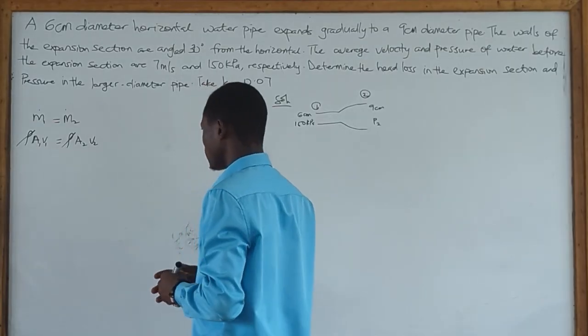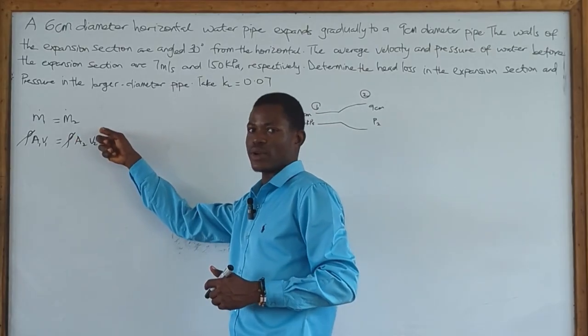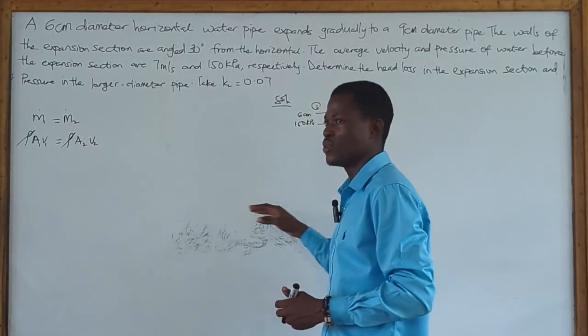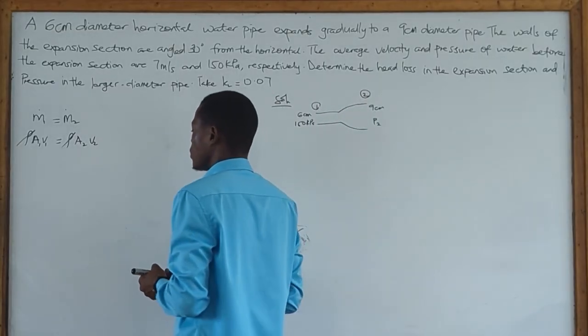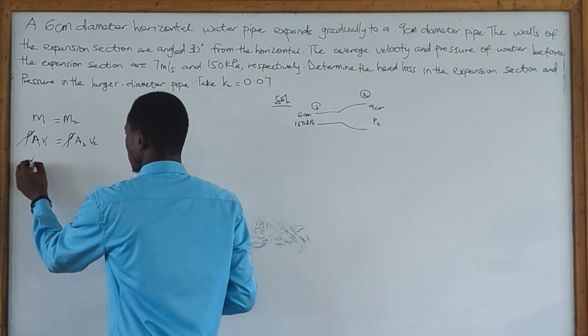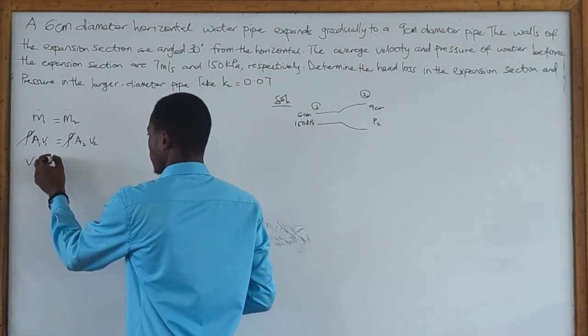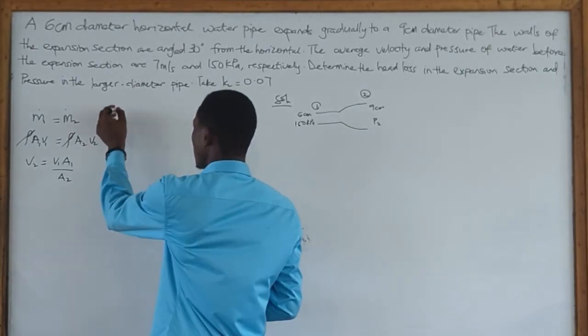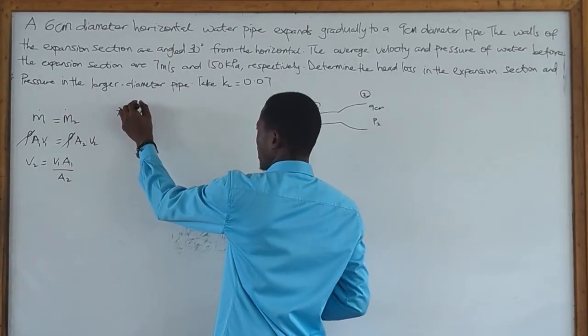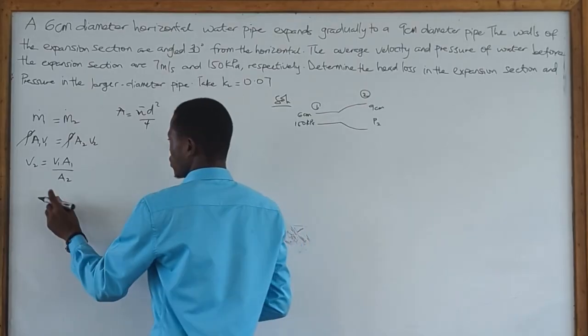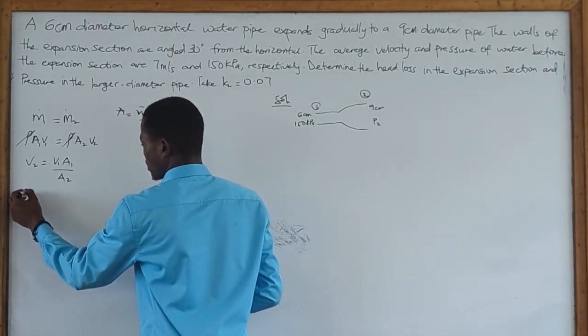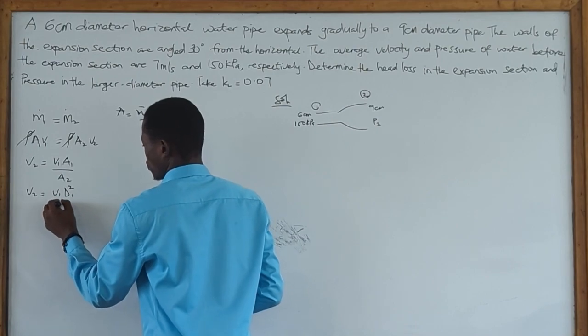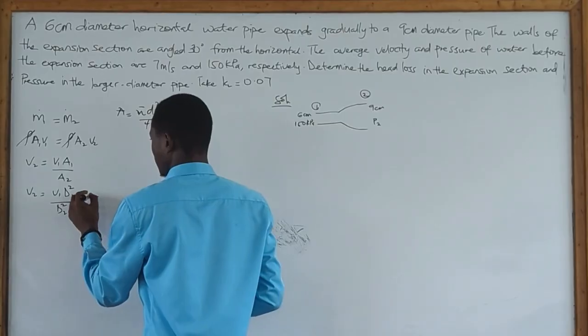We want to find our second velocity before we write our equation, the Bernoulli's equation involving the head losses. To find V2, we know that V2 is going to be equal to V1 A1 over A2. We know that the area of a circle is pi d squared over 4. So putting this into the equation, we are going to get V2 to be equal to V1 d1 squared over d2 squared.